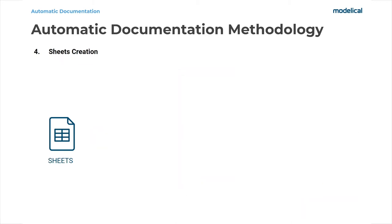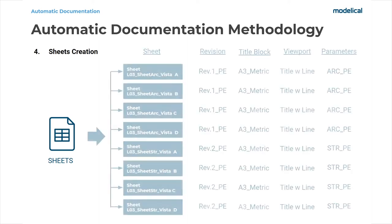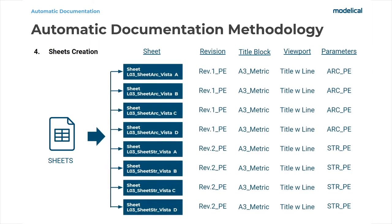The fourth step is to read the sheets spreadsheet and with one click, through a Dynamo routine, create all the sheets automatically — up to 134 sheets with their corresponding revision, title block, viewport titles or any other parameters.